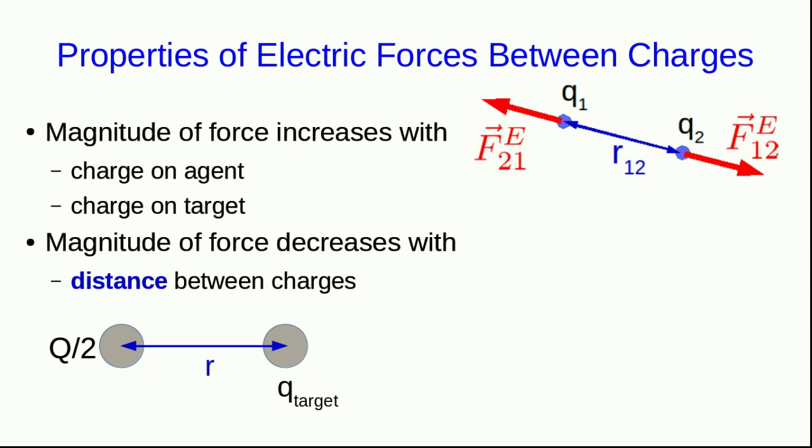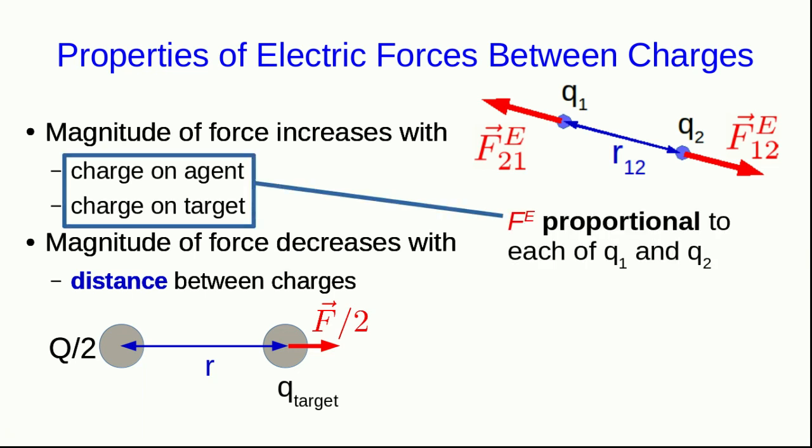Now, if you take away the second sphere, you can measure the new force on the target. And if you actually do this experiment, you find that it's half of what it was before. You can do the same sort of thing, varying the charge on the target. And in the end, you find that the magnitude of the force has to be proportional to each of q1 and q2.